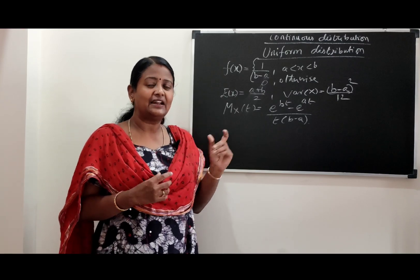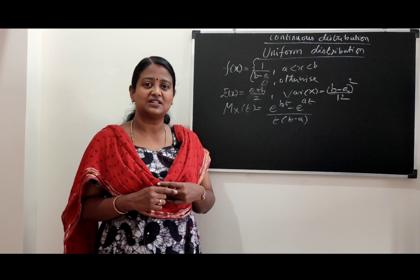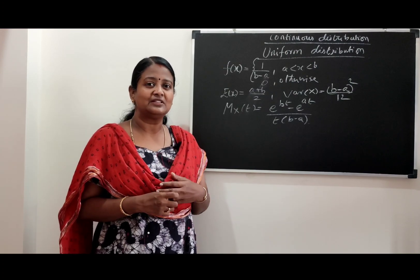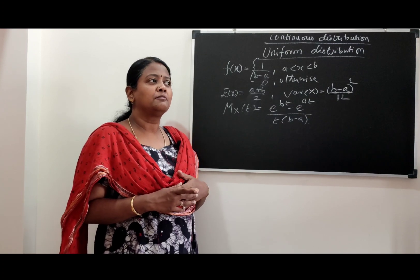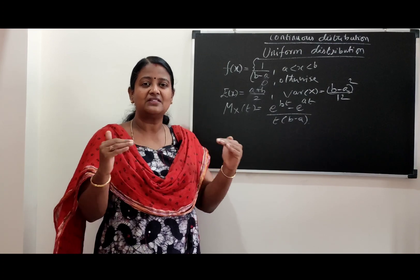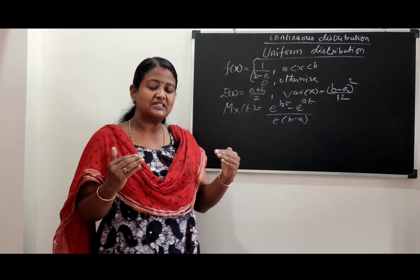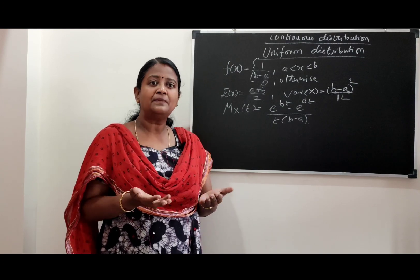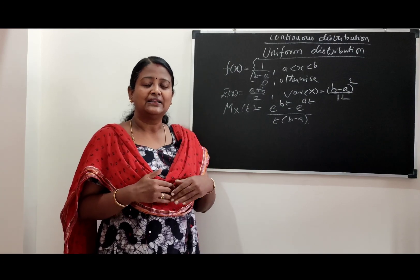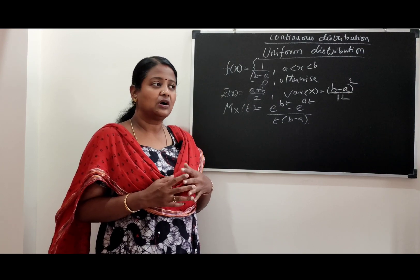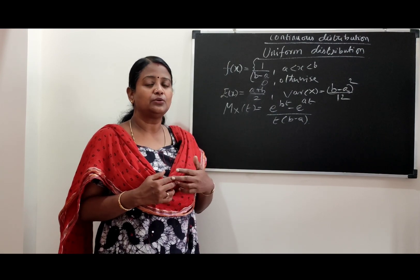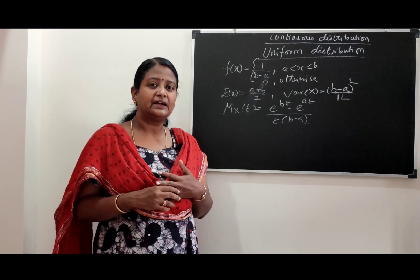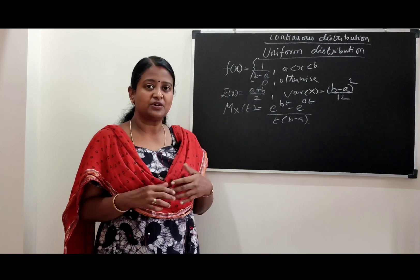We are going to start with Uniform Distribution. The easiest part of Continuous Random Variable is the Uniform Random Variable. Uniform is one of the numbers — the probability function has the same constant value. This is also called Rectangular Distribution — it is the same name.